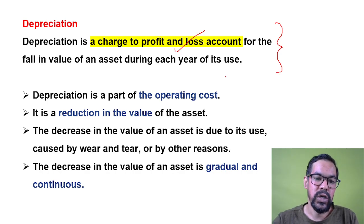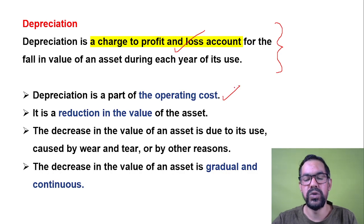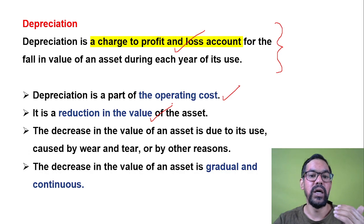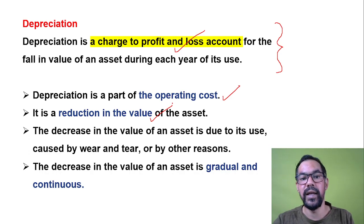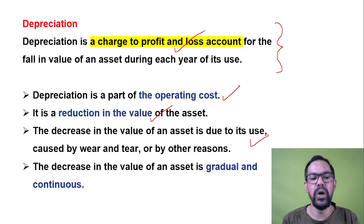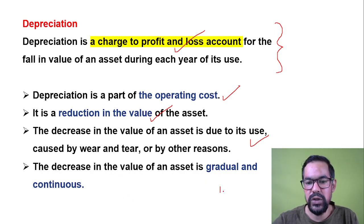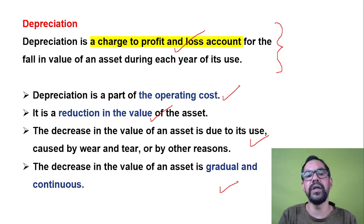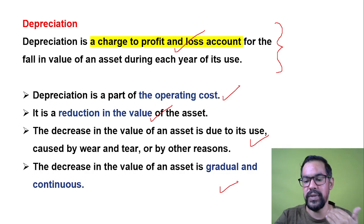Depreciation is part of operating cost — it is a reduction in the value of an asset. If you purchase an asset worth 10 lakh rupees and after one year it remains at 9 lakh, that reduction is your depreciation. The decrease in value of an asset is gradual and continuous; if you are continuously using an asset, its monetary value definitely decreases year by year.